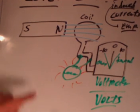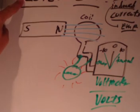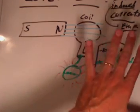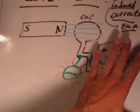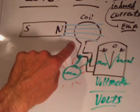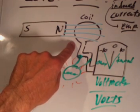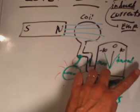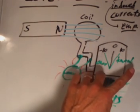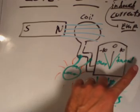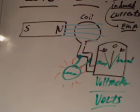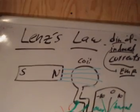So what Lenz's Law allows you to figure out then is which way would the needle actually deflect — or at least, what direction the current will go in the coil. Because if the needle deflects to the right, it means the current was going one way; if the needle deflects to the left, it means the current was going the other way. Lenz's Law allows you to figure that out.